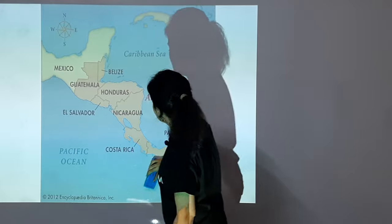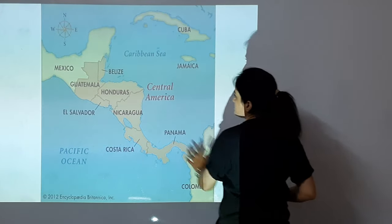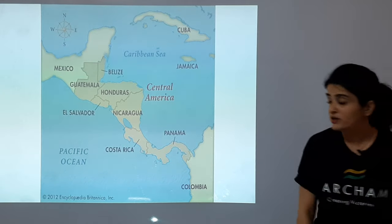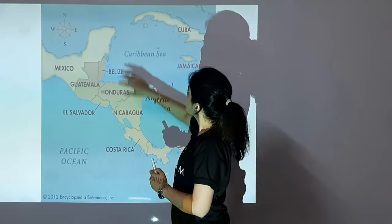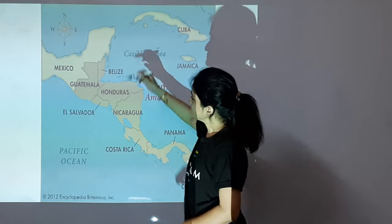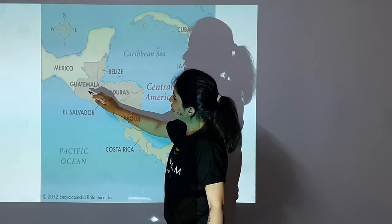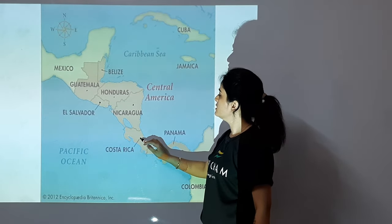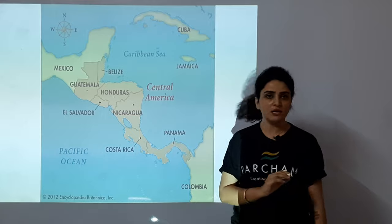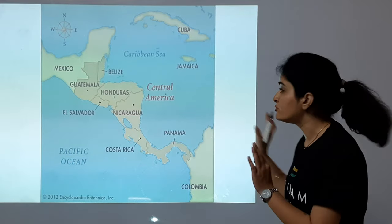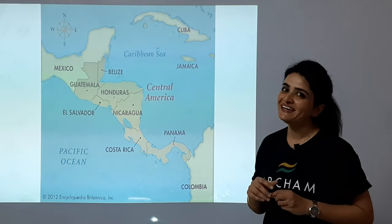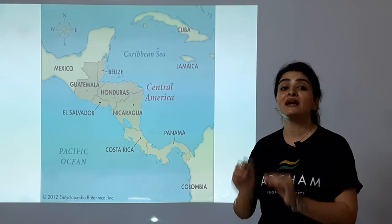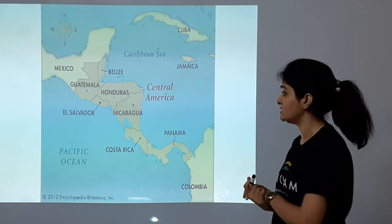Now we will learn the countries connecting North America and South America. This is the Caribbean Sea. The countries are: Belize, Guatemala, Honduras, El Salvador, Nicaragua, Costa Rica, and Panama. We need to keep all these countries clear in our minds until practice makes them permanent.